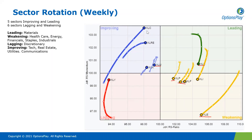Looking at the improving category — communications is performing very well, especially with Meta posting very good forward guidance and focusing on cutting costs. Meta makes a huge part of the communication sector, so I expect communications to continue performing well. Real estate has also seen a good recovery. Technology is in the improving category but showing minimal momentum, so it could easily drop back into the lagging category and rotate between these two categories for a few months.